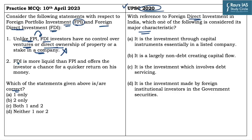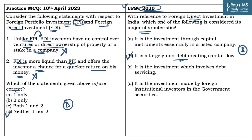The second statement — that FDI is more liquid than FPI and offers a quicker return — is also incorrect. FPI is more liquid than FDI. In FDI, the investor's money is tied up in a company, resulting in less liquidity and more risk. Both statements are incorrect, so the answer is D (neither 1 nor 2). The answer to the previous year question is B — FDI is largely a non-debt creating capital flow.